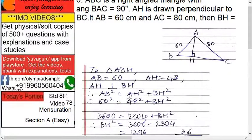So, AB square equals to AH square plus BH square, 60 square equals to 48 square plus BH square, okay? 3600 and 48 square is 2304. Now, how do you do this?